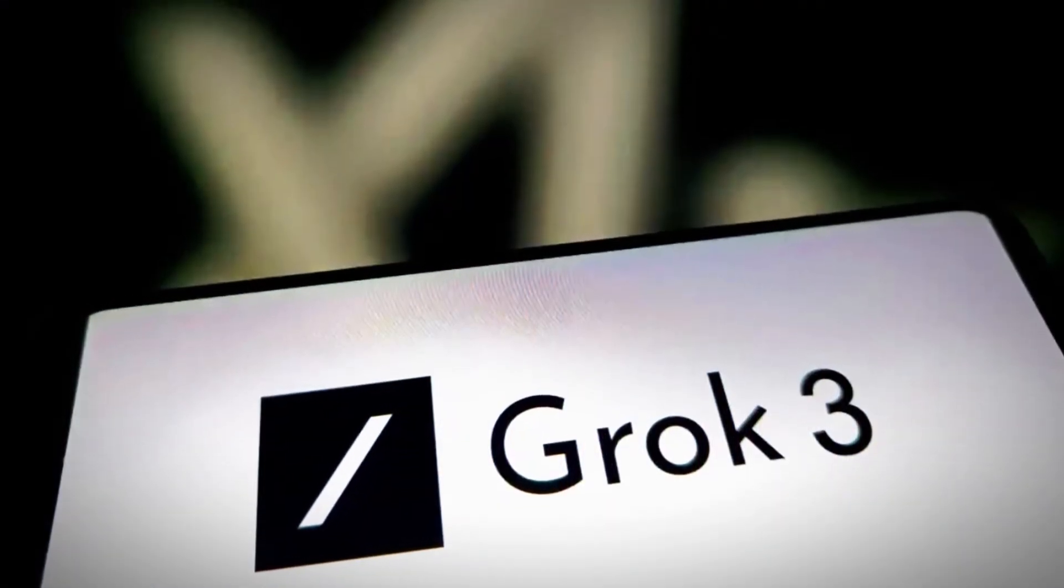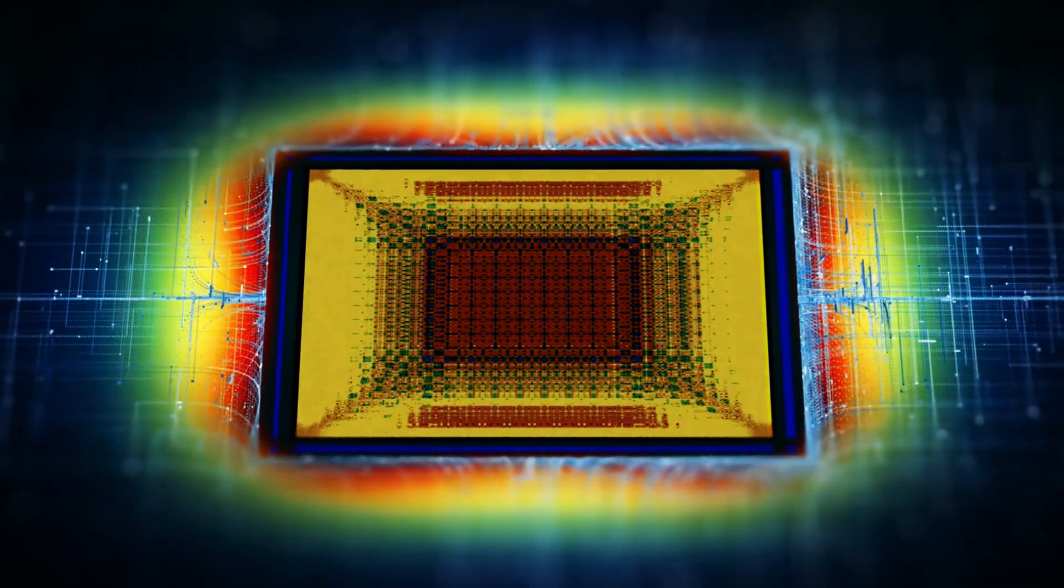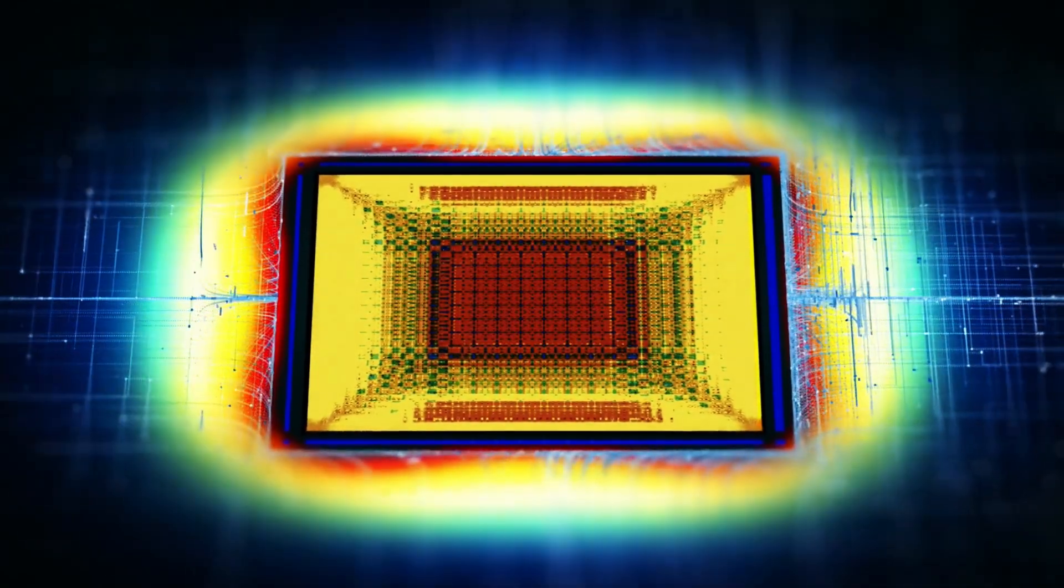Yet Grok3, an AI designed to analyze vast data sets for subtle anomalies, flagged a series of repeating structures in the chip's output data.